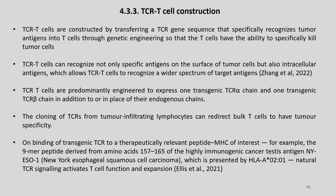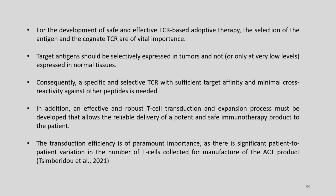The cloning of TCR from tumor-infiltrating lymphocytes can redirect bulk T cells to have tumor specificity. On binding of the transgenic TCR to a therapeutically relevant peptide-MHC of interest—for example, the 9-mer peptide derived from amino acids 157 to 165 of the highly immunogenic cancer-testis antigen NY-ESO-1 presented by HLA-A—natural TCR signaling activates T cell function and expansion. A specific and selective TCR with sufficient target affinity and minimal cross-reactivity is needed. Additionally, an effective T cell transduction and expansion process must be developed allowing reliable delivery of a potent and safe immunotherapy product to the patient. The transduction efficiency is of paramount importance given significant patient-to-patient variation in T cells collected for manufacture of the ACT product.